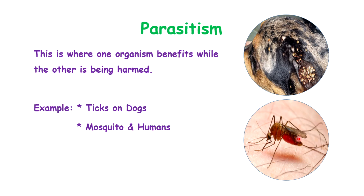The next type on the list is parasitism. This is where one organism benefits while the other is being harmed — it's a one-sided situation.